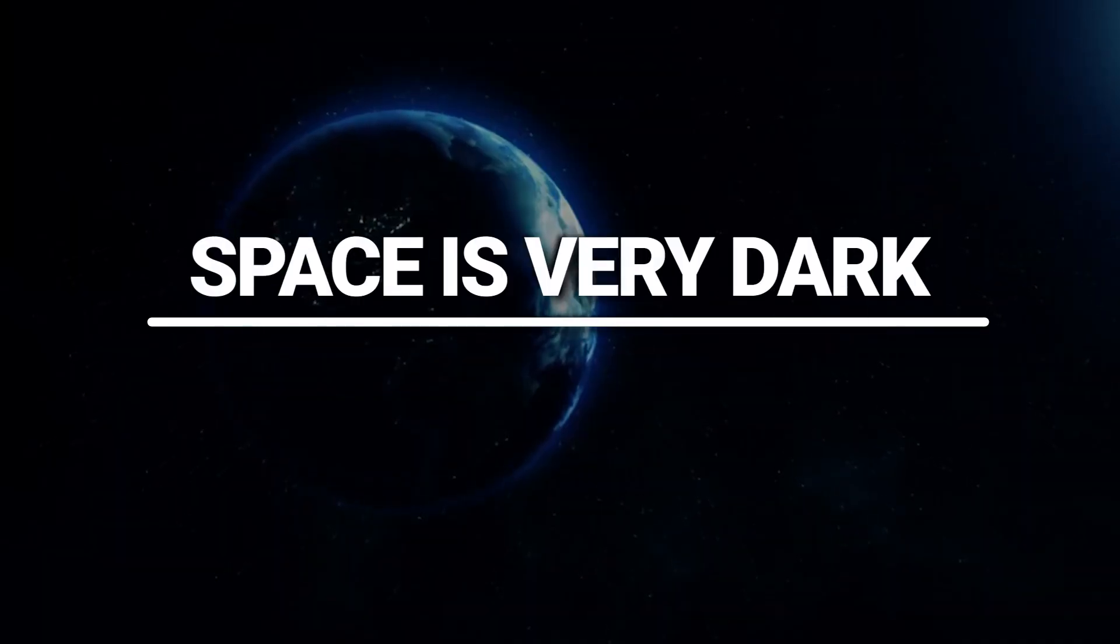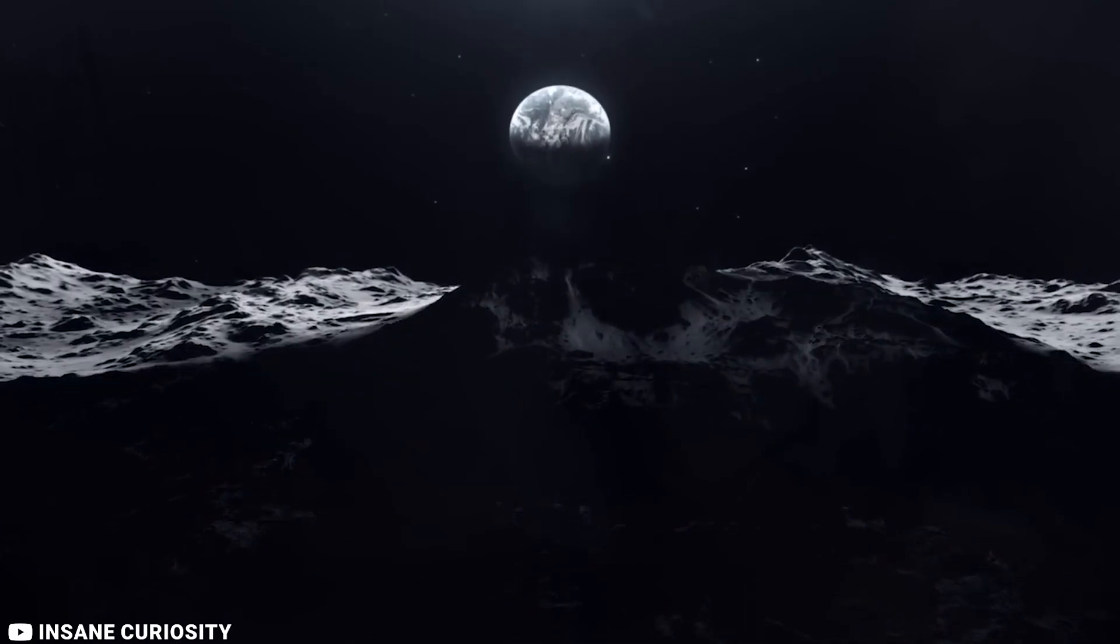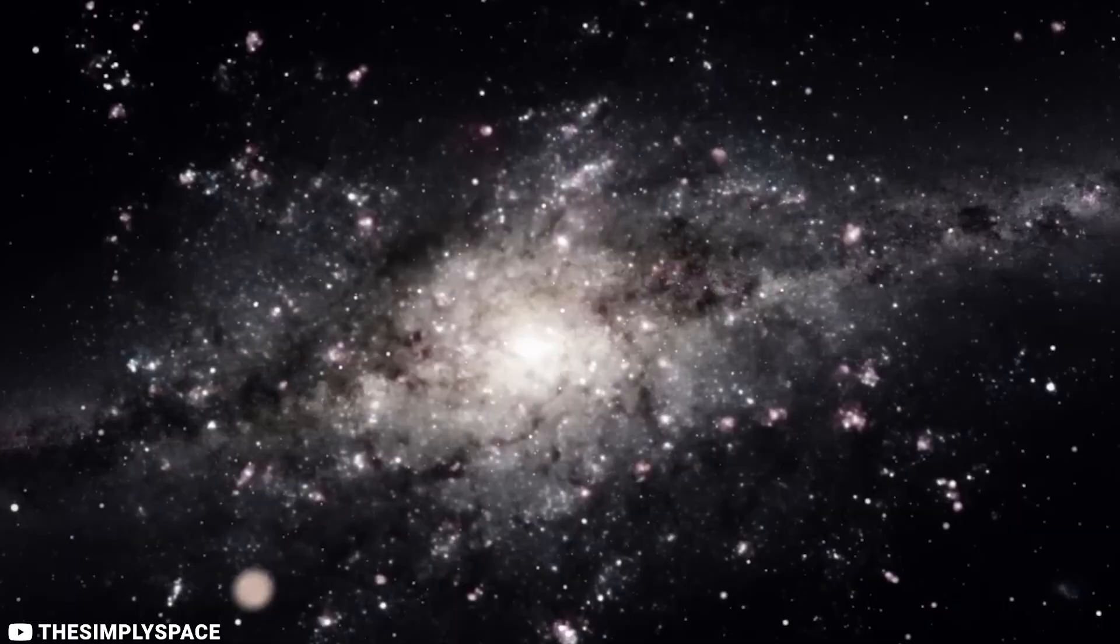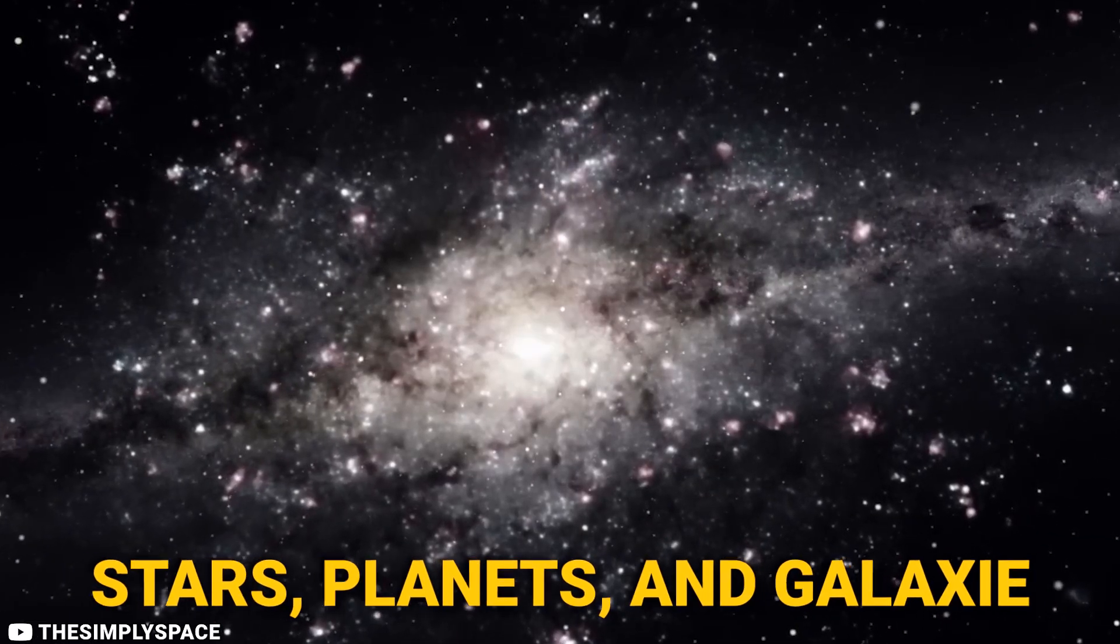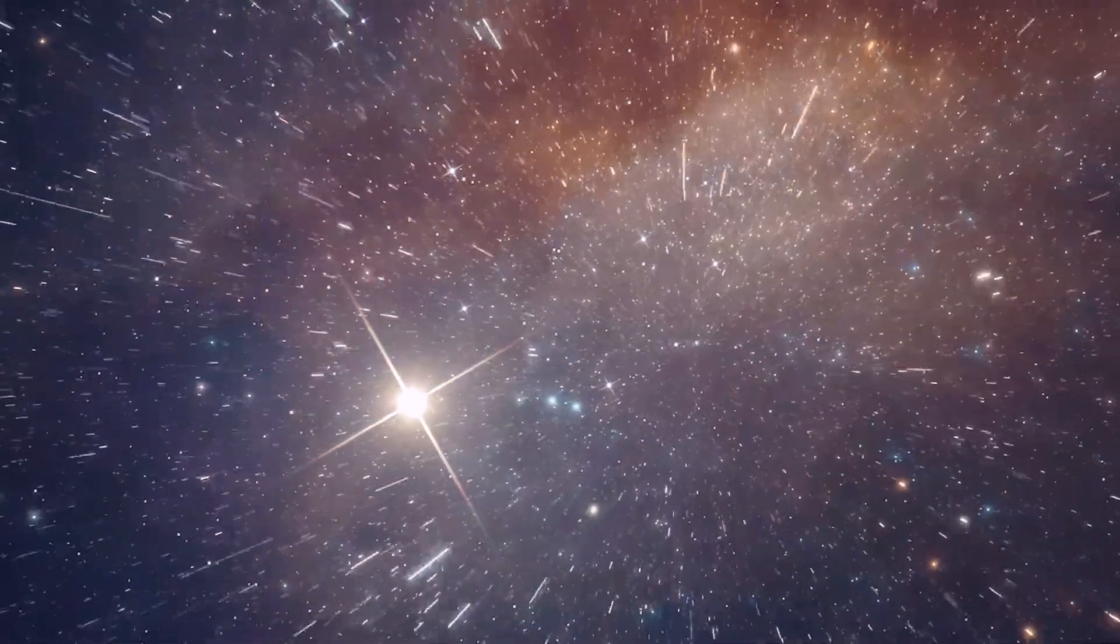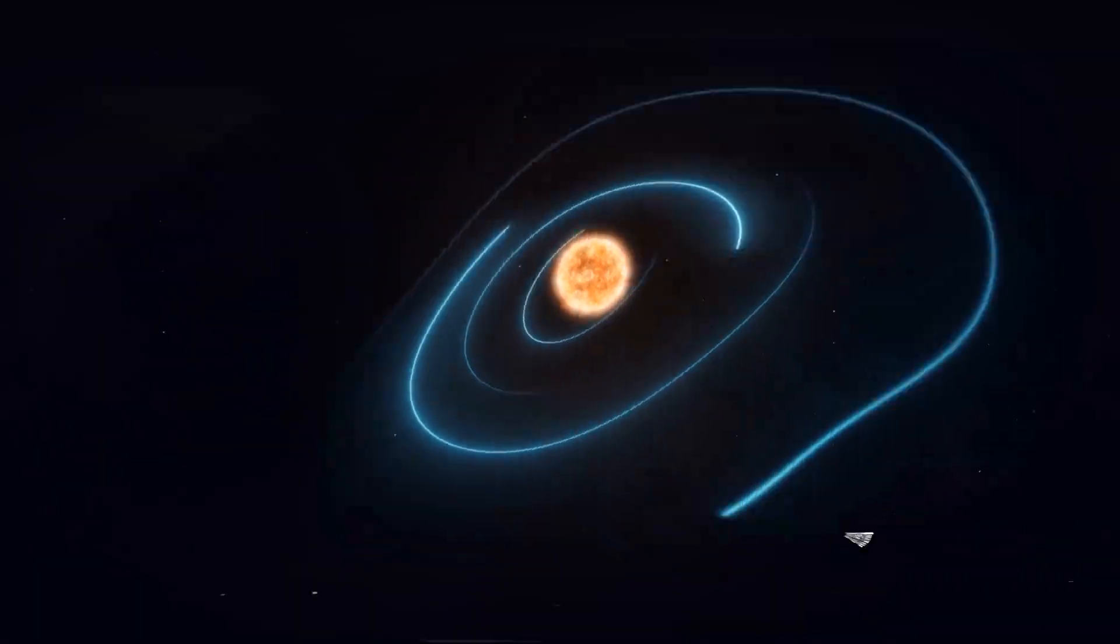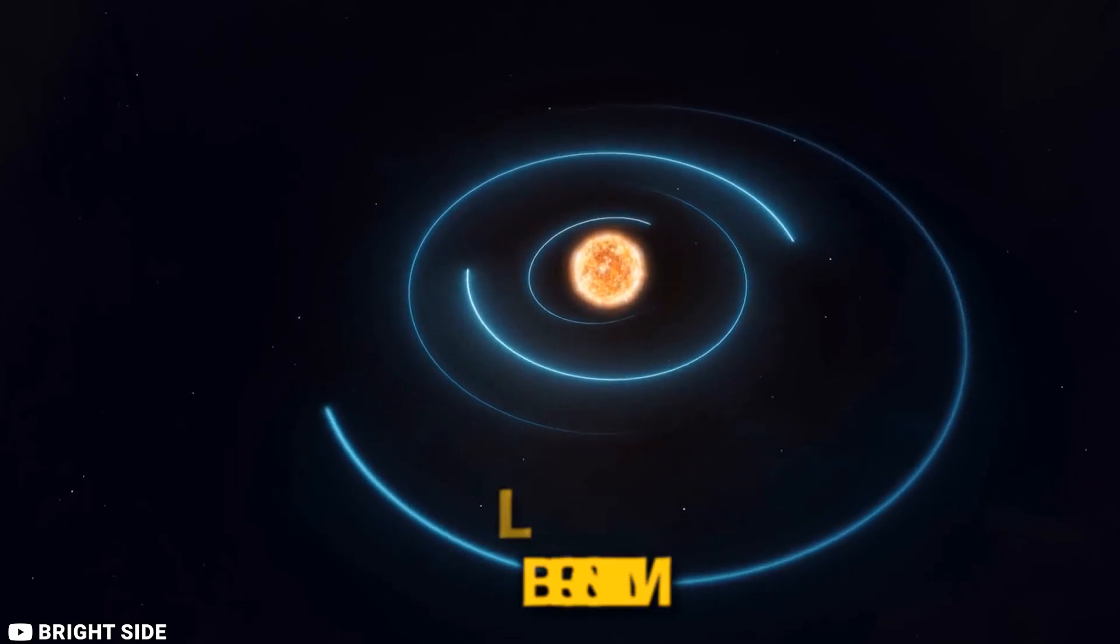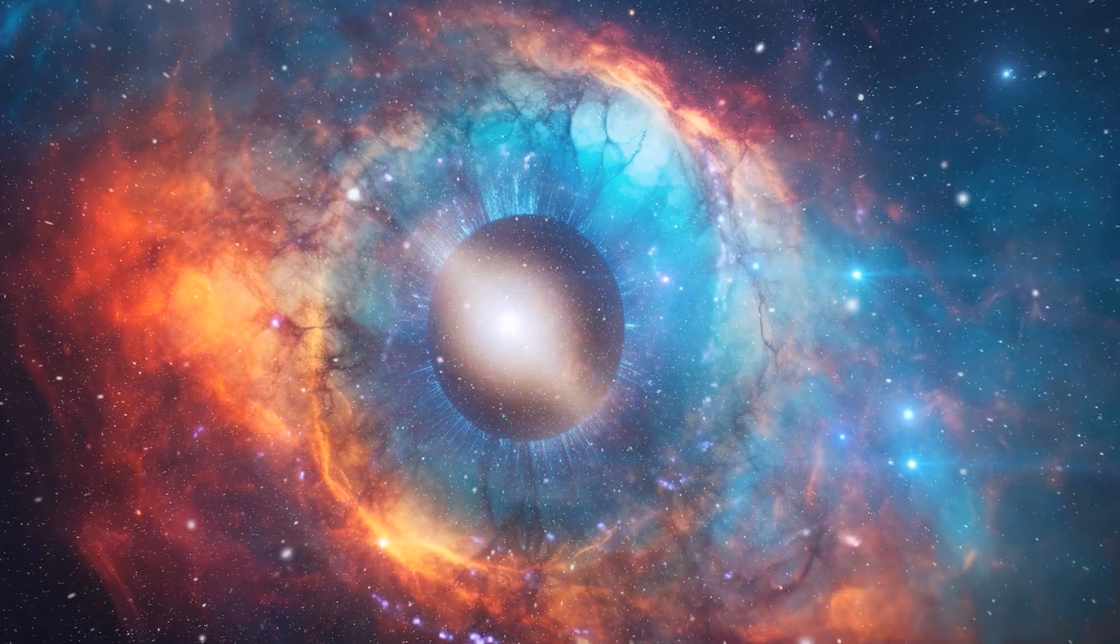Space is very dark. Space is very dark because there is no sunlight in space. The only light you would see is from the stars, planets, and galaxies. Even the brightest stars are very dim when you're looking at them from space. That's because the light has to travel through millions or billions of empty space to reach your eyes.